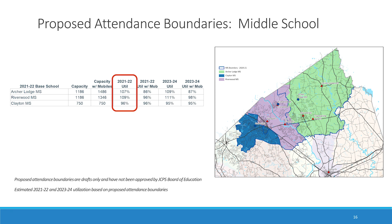There have been adjustments to the boundaries between Riverwood and Clayton, and adjustments to the boundaries between Archer Lodge and Riverwood. Some of these adjustments were made toward balancing utilization, and some were made to accommodate clean feeder patterns, as we'll see in a future slide.